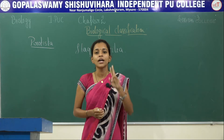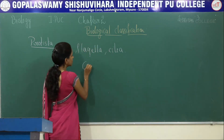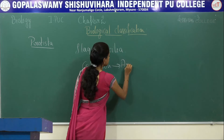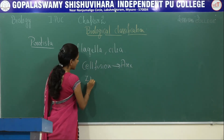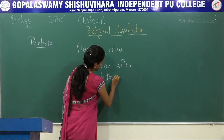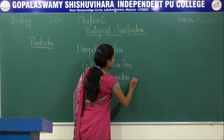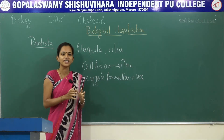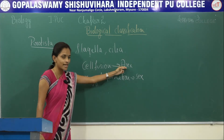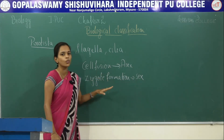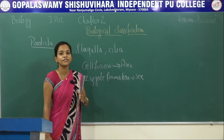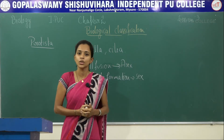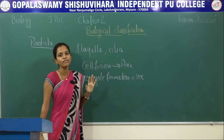Reproduction has two different forms: cell fusion, where two different cells fuse to form a new organism — that is asexual reproduction — whereas sexual reproduction involves zygote formation, when a male and female gamete fuse together to form a zygote, which then develops into a new organism. This is the mode of reproduction in the case of Protista.